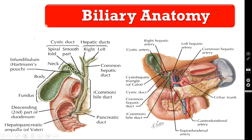The common hepatic duct is joined by the cystic duct to form the common bile duct. The common bile duct is then joined by the pancreatic duct, forming a common channel which opens in the second part of the duodenum. Just proximal to the sphincter of Oddi there is the ampulla of Vater, and then the sphincter of Oddi. The gallbladder has four parts: fundus, body, neck, and the cystic duct.